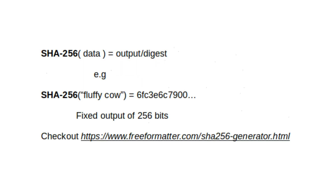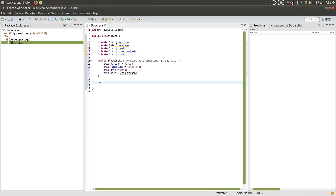Before we define our computeHash method, let's take a look at what hashes are. Hashes are one-way functions — they take in some data and output some data. This output we call the digest. One hash function we use is SHA256. It's a cryptographic hash function, which means it's very difficult to go from a digest and find the input. I'm going to leave the computeHash code for this method online for you to study in your own time.